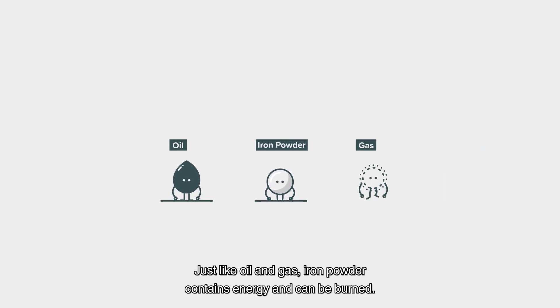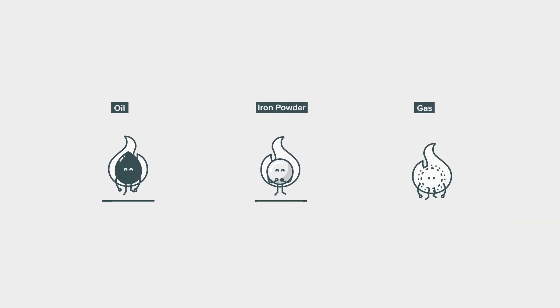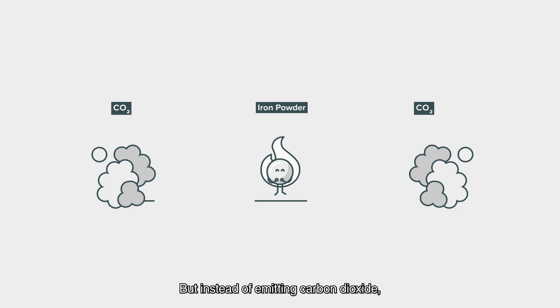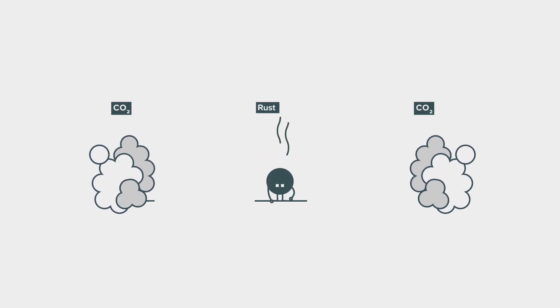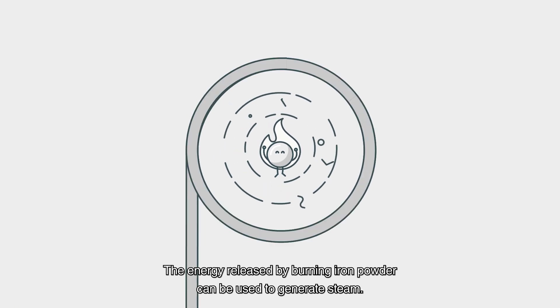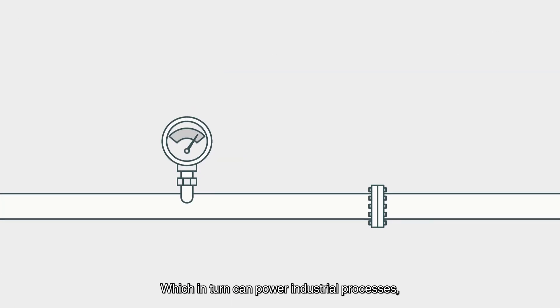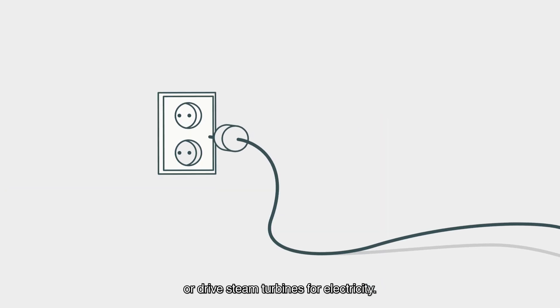Just like oil and gas, iron powder contains energy and can be burned. But instead of emitting carbon dioxide, the only emission from burning iron is rust. The energy released by burning iron powder can be used to generate steam, which in turn can power industrial processes or drive steam turbines for electricity.